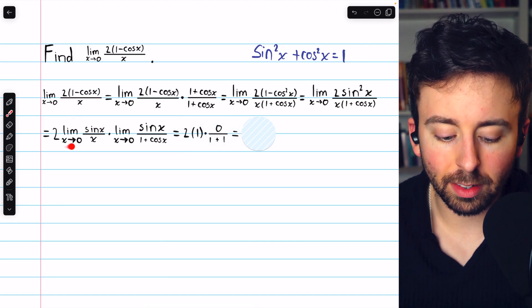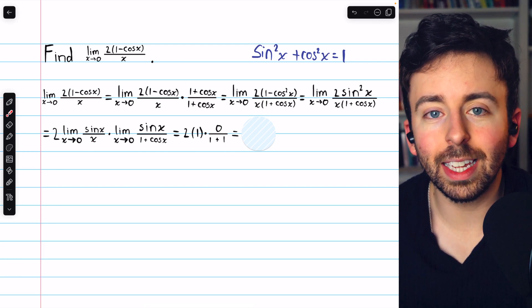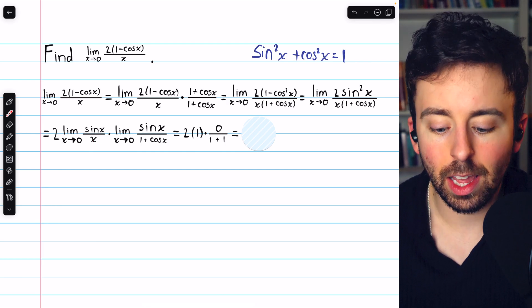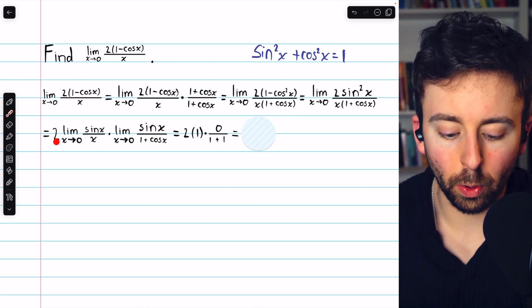The limit of sine x over x as x approaches 0, hopefully you know, is equal to 1. There's a link in the description to my lesson proving that if you're unfamiliar with it. So this is just 1. 2, of course, is just 2.